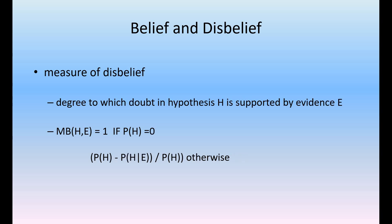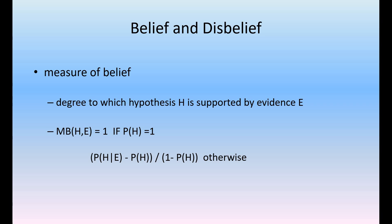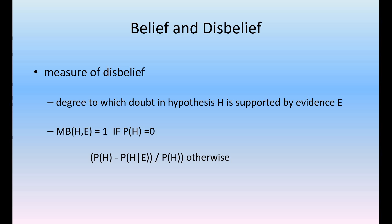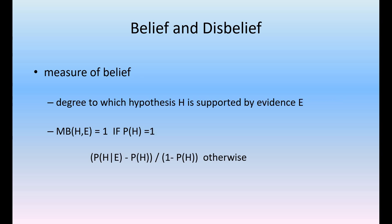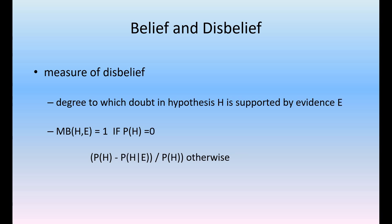The measure of disbelief is the degree to which doubt in the hypothesis is supported by the evidence. MD(H, E) equals 1 if probability of H equals 0. In the belief case it is 1 when probability of H equals 1, but in the disbelief case it is when probability of H equals 0. The measure of disbelief is given as the probability of H given E divided by probability of H, otherwise it is different.